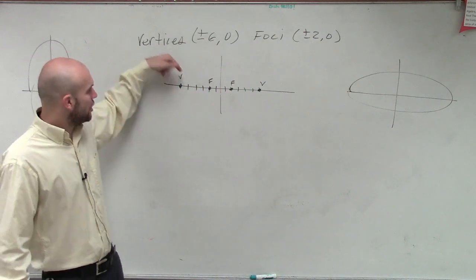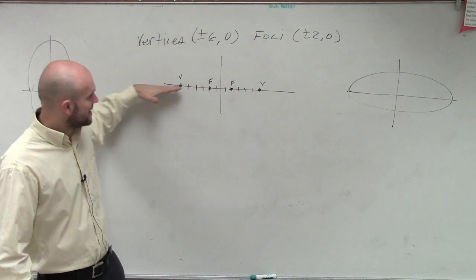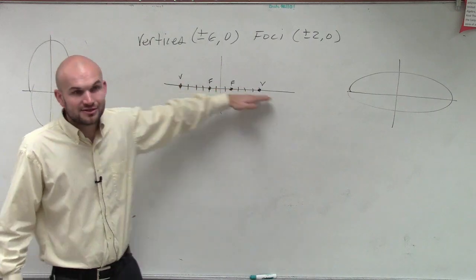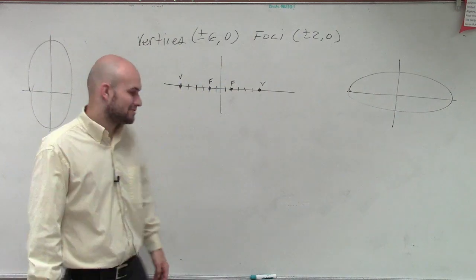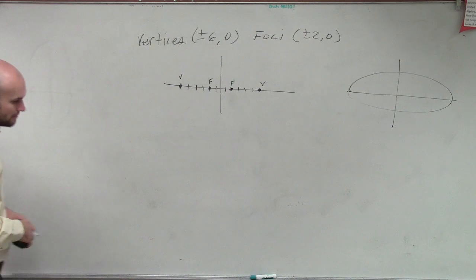Horizontal, right? It's pretty obvious. You can notice that, you know that the vertices, the foci, all have to be on the major axis. And since this major axis is going horizontally, then you have a horizontal ellipse, right? So, let's just eliminate this right here.